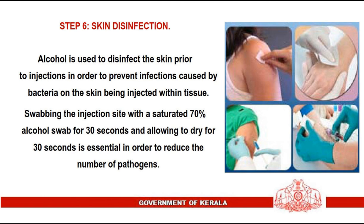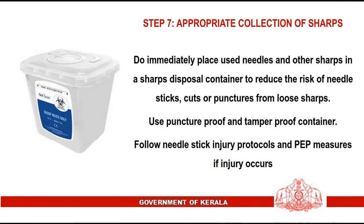Step 6: Skin disinfection. Alcohol is used to disinfect the skin prior to injections in order to prevent infections caused by bacteria on the skin being injected into tissue. Swab the injection site with a saturated 70% alcohol swab for 30 seconds and allow to dry for 30 seconds to reduce the number of pathogens.